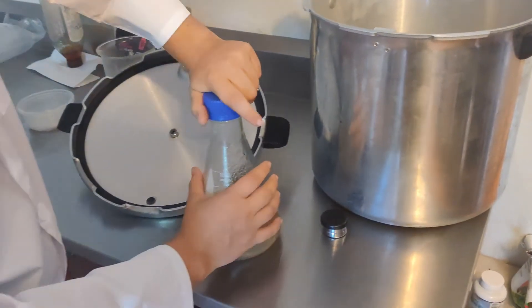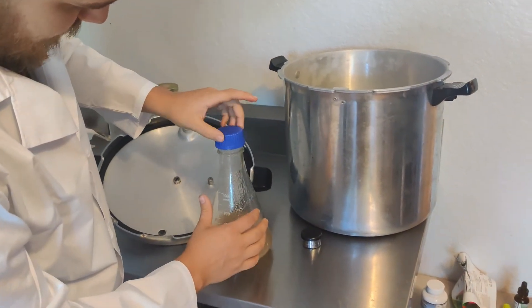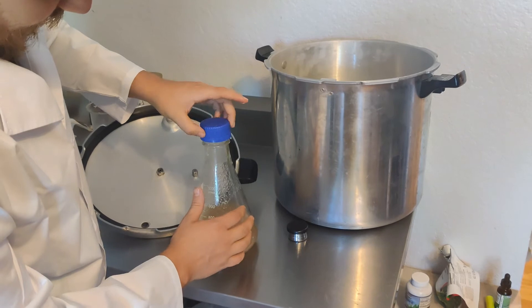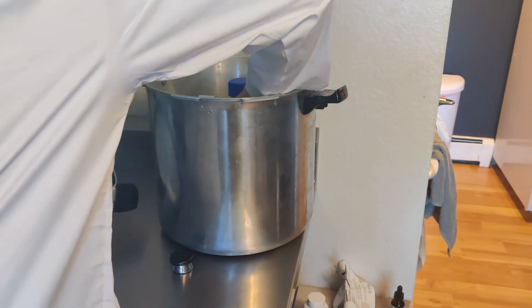One important thing to note is that you don't want your cap to be sealed. Just place the cap on and tighten in a few threads so that it's not sealed, or else you'll have a big mess in the pressure cooker.